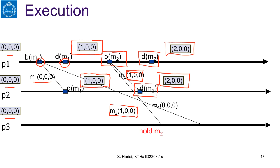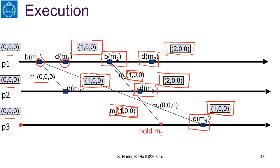Now let's look at the case where message M2, which has this vector, is reliably delivered at P3. But P3 did not see the event coming from P1. Therefore, it has to wait until that event is reliably delivered. Once P3 increases the first element in its vector clock, it can now deliver M2. So this is the example.